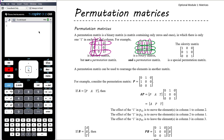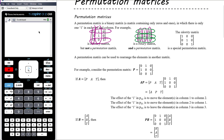The identity matrix is a special permutation matrix — it is a specific instance of a permutation matrix where each row only has one one and each column only has one one. But it's a specific example; we would still refer to it as the identity matrix. We'll talk more about the identity matrix in future videos, particularly when we look at the inverse matrix.